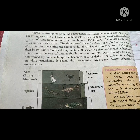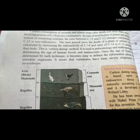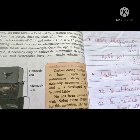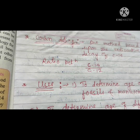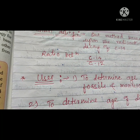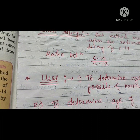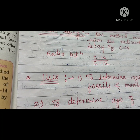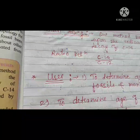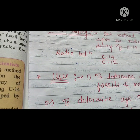The decaying process of carbon-14 occurs continuously from the dead body of plants and animals. Instead of remaining constant, the ratio between carbon-14 and carbon-12 changes. Only carbon-14 continuously changes while carbon-12 remains constant, because C-12 is non-radioactive and C-14 is radioactive. Therefore, the ratio between them is always changing.